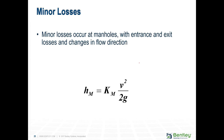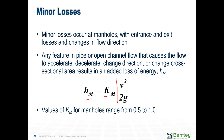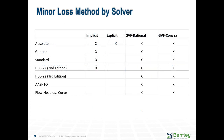We lose energy due to friction but also due to minor losses — things like manholes where you have entrance losses, exit losses, and changes in flow direction. Minor losses are calculated by multiplying a K value (the minor loss coefficient) times the velocity head. Sometimes, if your velocity is very small as it often is in sewer systems, V squared turns out to be a very small number, and when you multiply your K value by it, you end up with a very small result.